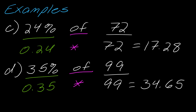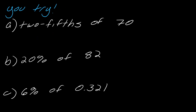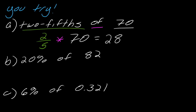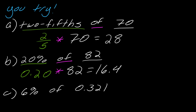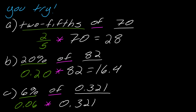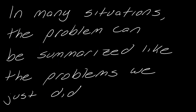Now let's make sure you feel comfortable — pause and try these three examples, then hit play for solutions. For (a), two-fifths of 70: the expression is 2/5 times 70, giving 28. For (b), 20% of 82: 0.2 times 82 equals 16.4. For (c), 6% of 0.321: be careful converting — 6% is 0.06, so 0.06 times 0.321 gives 0.01926.